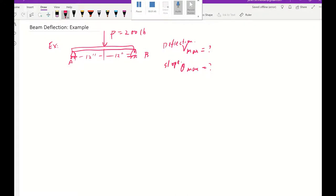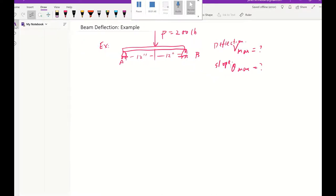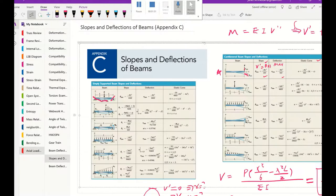You already know we're going to look at the table. This is a simply supported beam. It will be this particular one. The deflection is going to be P L cubed over 48 EI. That's the maximum deflection. And the maximum slope is going to be P L squared over 16 EI. So we're going to copy those two formulas to solve our problem.